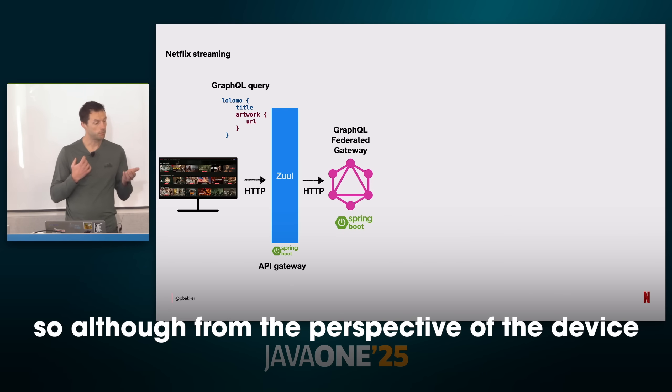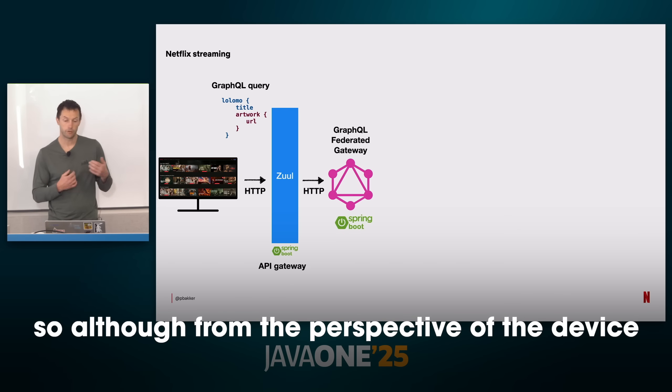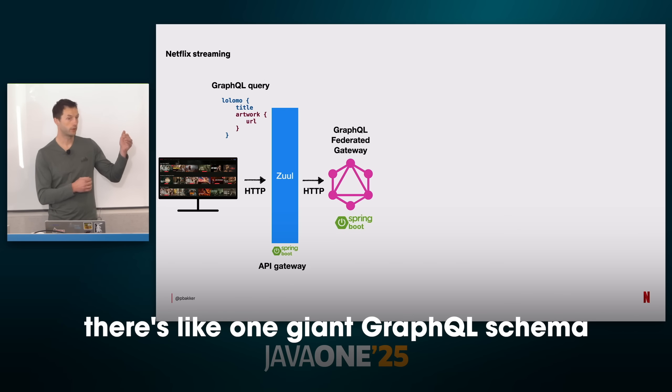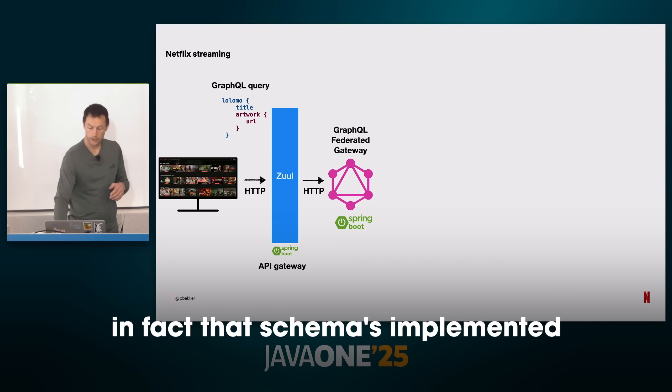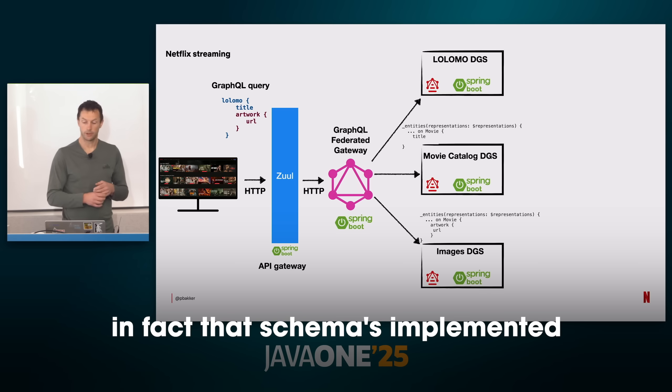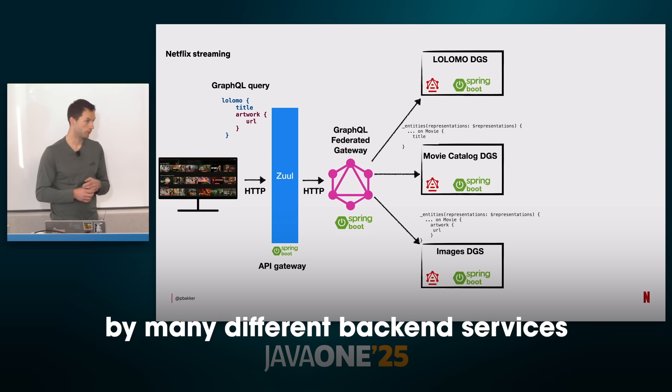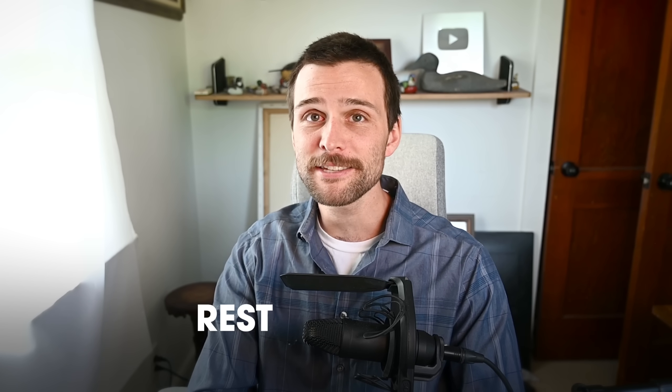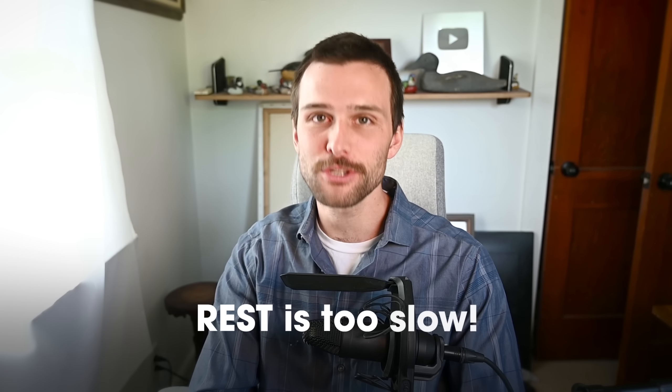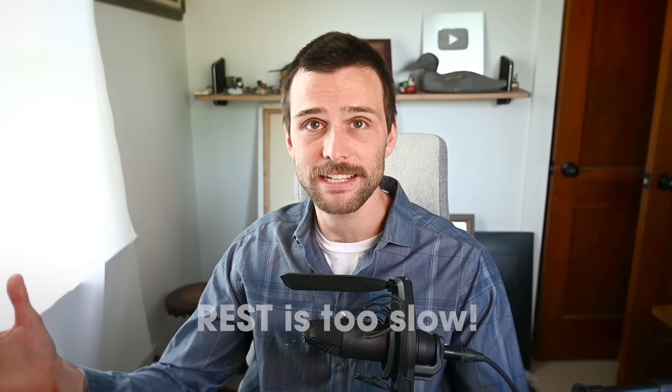As Paul explains: although from the perspective of the device there's one giant GraphQL schema, that schema is in fact implemented by many different backend services. Those backend services communicate with gRPC. And some of you may not like me saying this, but the reason they do that is because REST is too slow.